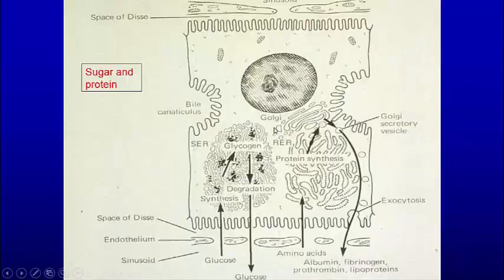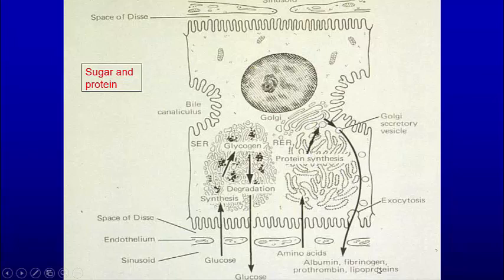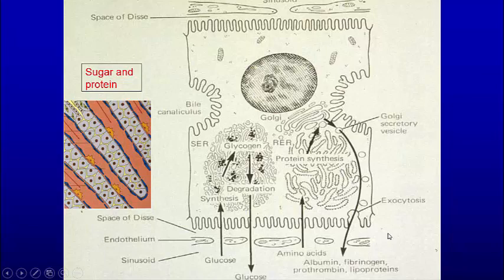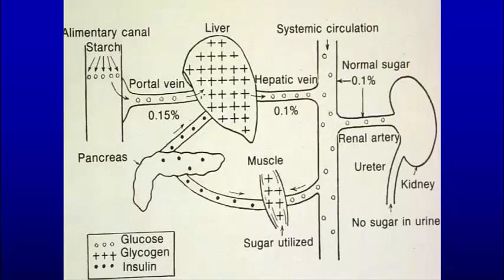In terms of sugar and protein: glucose goes in and is stored as glycogen, or it's broken down and released as glucose. When you're digesting food, glucose is taken in and stored, then distributed slowly whenever you're fasting in between. Amino acids come in and the rough ER particularly produces albumin, fibrinogen, prothrombin, lipoproteins, and different things. From the portal vein, you have sugar coming in, glycogen storage, and then a little bit of sugar coming out as it's stored in through there.